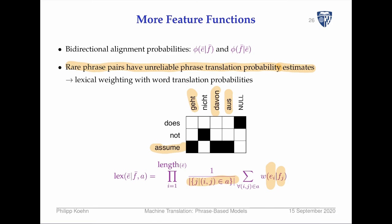Maybe 'assumes' given 'geht' is still pretty high, and 'assumes' given 'davon' maybe low, and 'assumes' given 'aus' maybe low. We add up all these word translation probabilities and then divide by three — the number of different word translation probabilities — so we're averaging over them. Each English word has to be explained. Words like 'does' that have no correspondence in German are then explained by the null word.